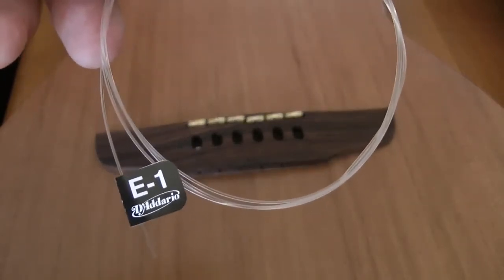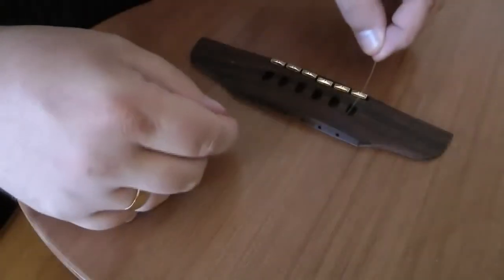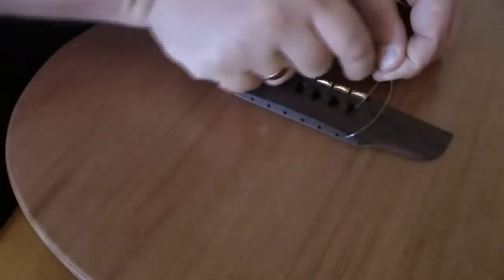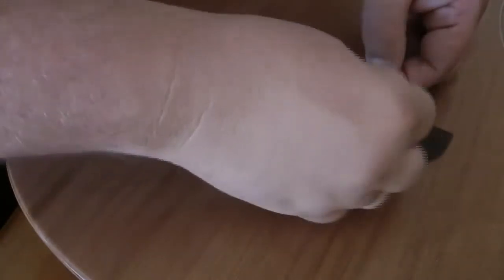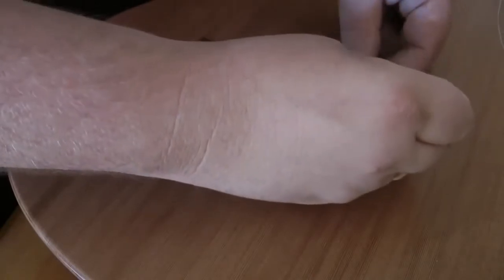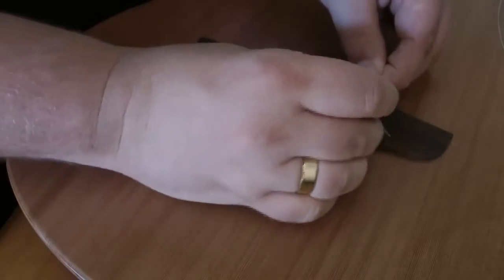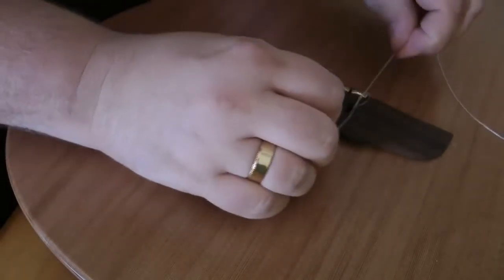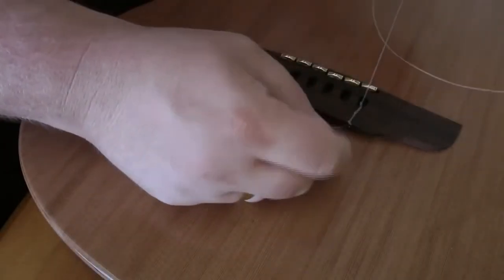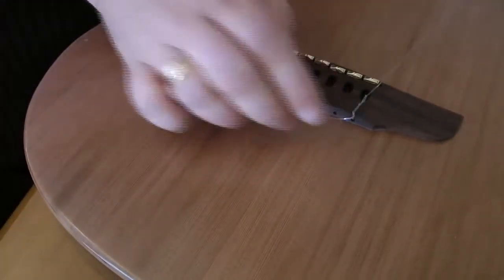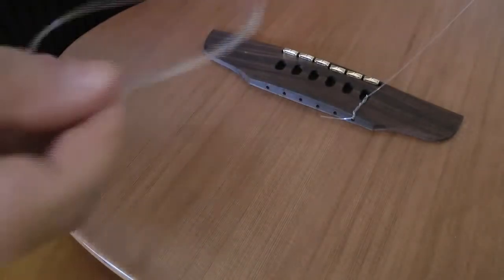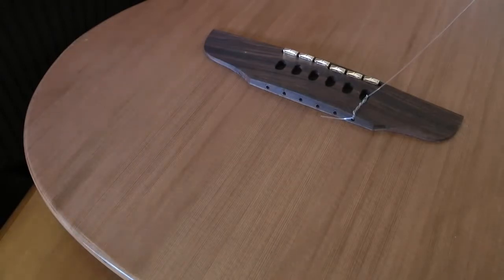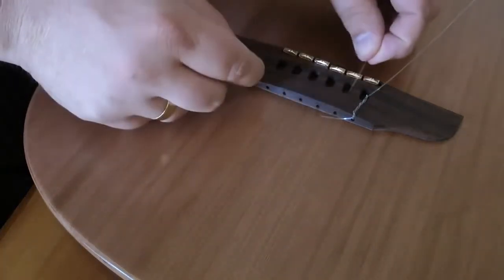The first string up is the E string, these are the clear nylon style strings. They can be quite difficult to maneuver sometimes. The first thing you need to do is push them through the hole in the bridge, then turn the string around and wind the string through. I'm a bit of a klutz when it comes to these things, so I find them difficult to manage. Don't expect to do it on the first attempt.